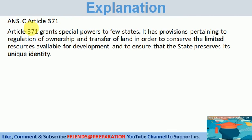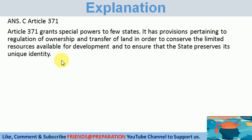The correct answer is C. Article 371. Article 371 grants special powers to a few states. It has provisions pertaining to regulation of ownership and transfer of land in order to conserve the limited resources available for development and to ensure that the state preserves its unique identity.